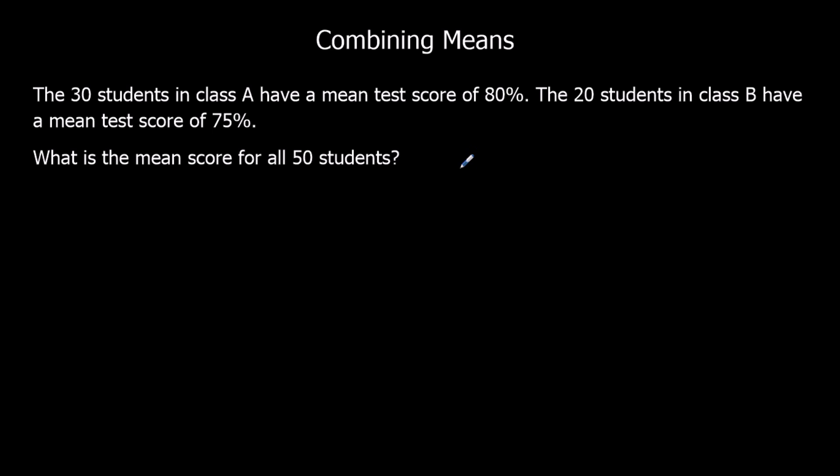To find a mean we need to know the total, so everything added up, divided by how many. But in these cases we've got different groups.